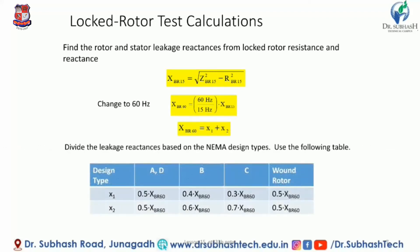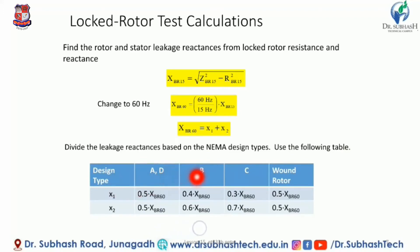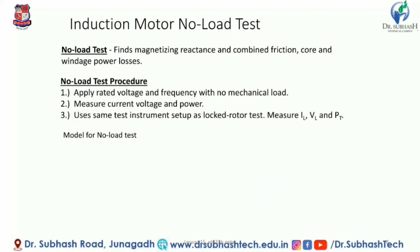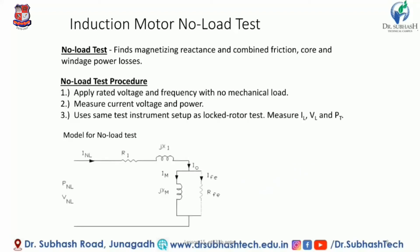Divide the leakage reactance based on the NEMA design types using the following tables: Design Type A — X1 reactance and X2 reactance; Design Type B — ABDC parameters; wound rotor parameters. Using these, we configure X1 and X2 for the block rotor test. Next, we configure the No Load Test, which finds the magnetizing reactance Xm and the combined friction, core, and windage power losses.